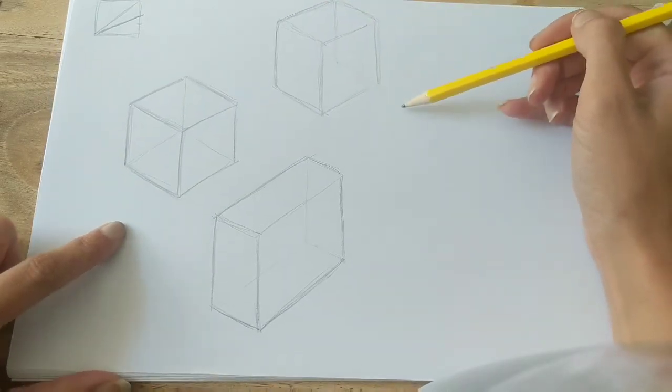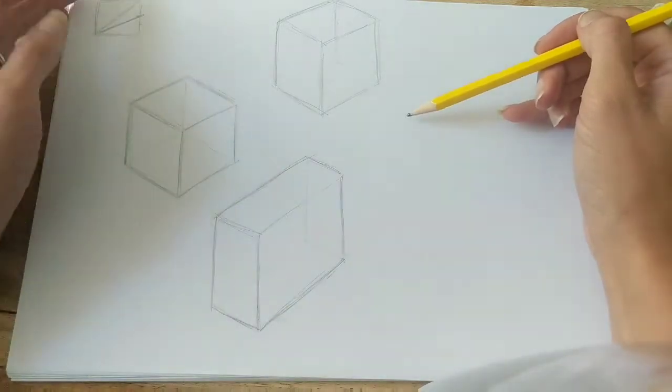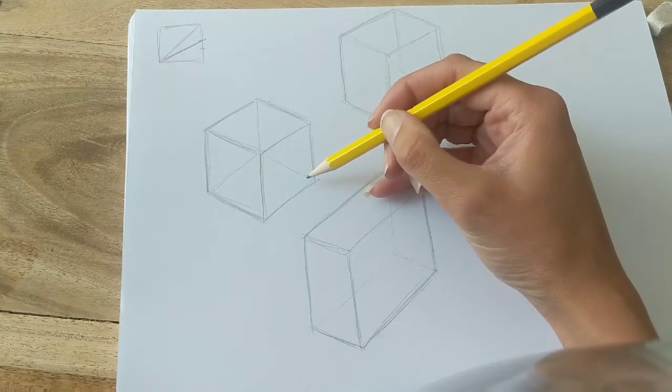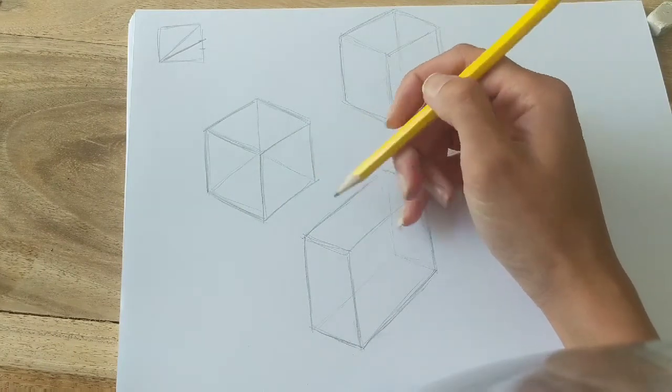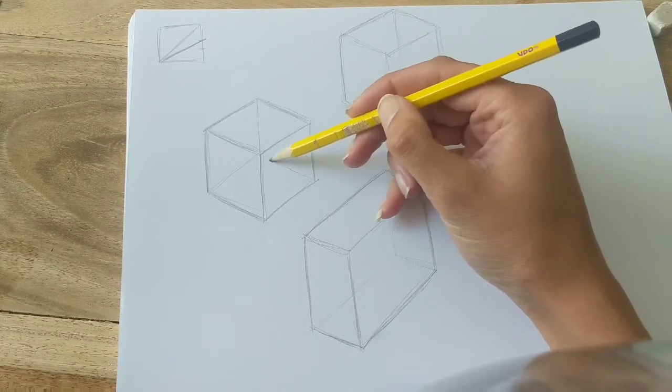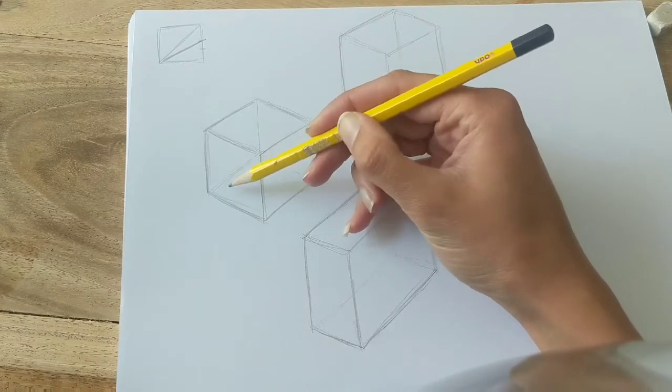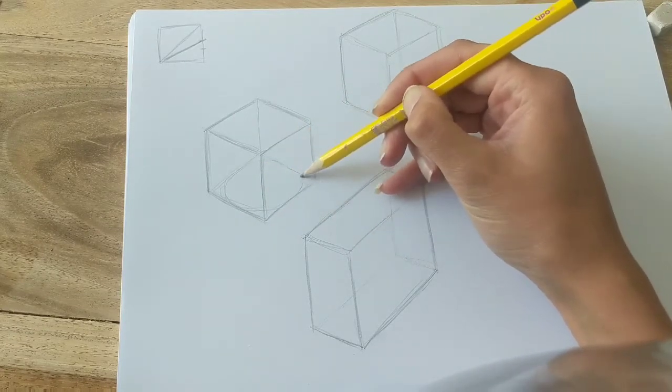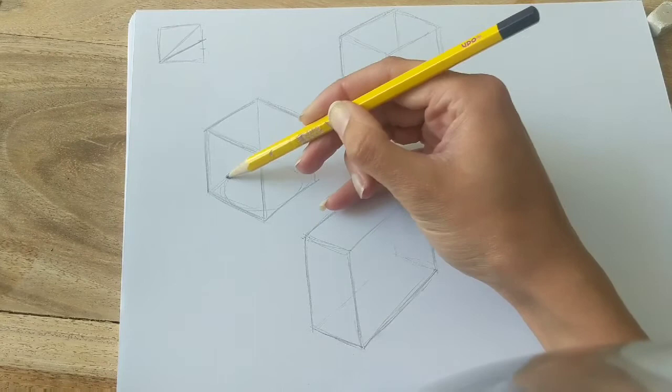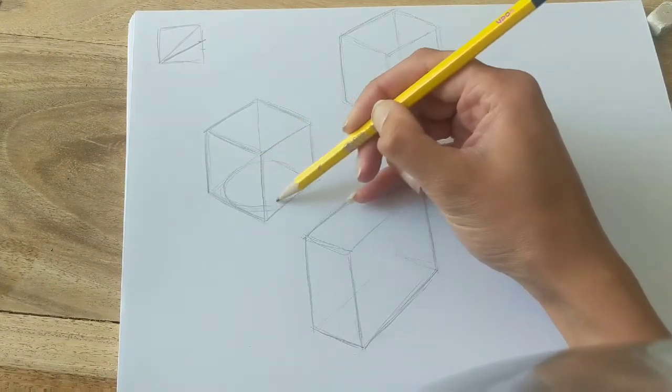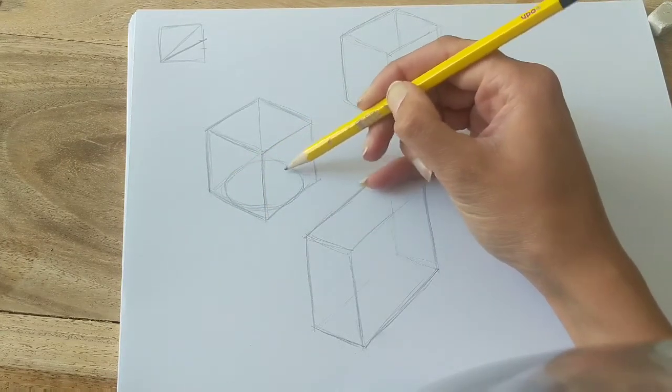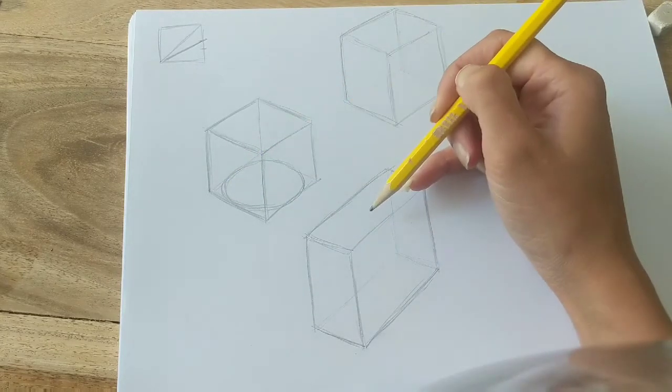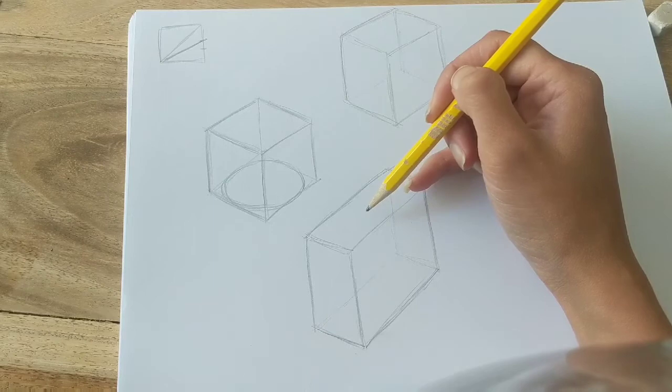Now we're going to start off with a cone. So this bottom face here of our cube, I'm going to draw in an ellipse. Remember that an ellipse is an oval. You can see that I'm using that sort of diamond shape to guide that ellipse.